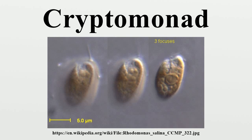A few cryptomonads, such as Cryptomonas, can form parmeloid stages, but readily escape the surrounding mucus to become free-living flagellates again. Some Cryptomonas species may also form non-motile resting stages with rigid cell walls to survive unfavorable conditions.